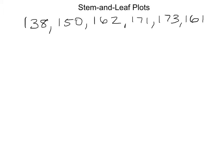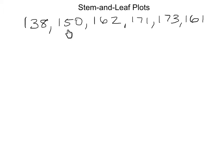Today we will be exploring stem and leaf plots. For a stem and leaf plot, we are looking at the stem, which in these three-digit numbers would be the numbers in the 100s and the 10s column. So these are the stems — the 100s place and 10s place. The leaves are the numbers in the 1s place.